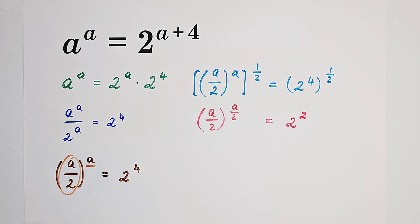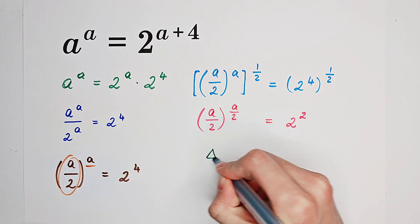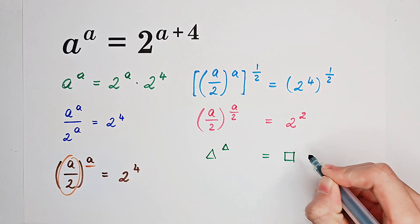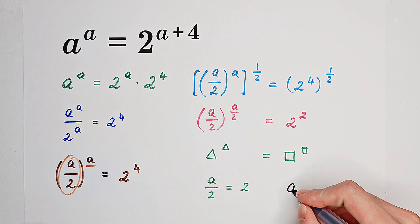But yes, look. Here, we have something to the power of something. On the right-hand side, we also have something to the power of something. It means that A over 2 is equal to 2 because in the real domain, the function x to the power of x is injective. So A equals 2 times 2 equals 4.